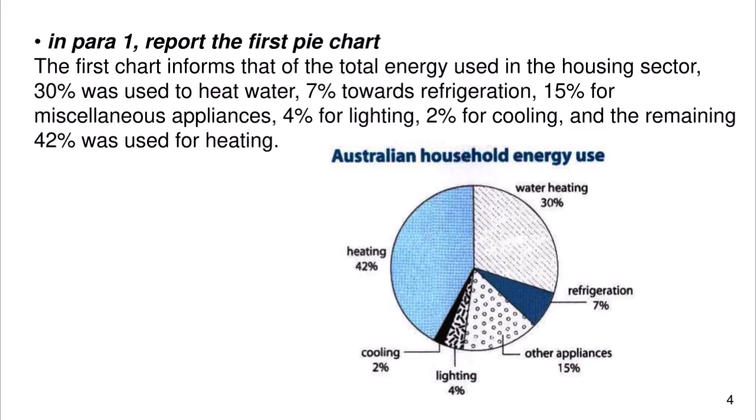In para 1, report the first pie chart. The first chart informs that of the total energy used in the housing sector, 30% was used to heat water, 7% towards refrigeration, 15% for miscellaneous applications, 4% for lighting, 2% for cooling, and the remaining 42% was used for heating.